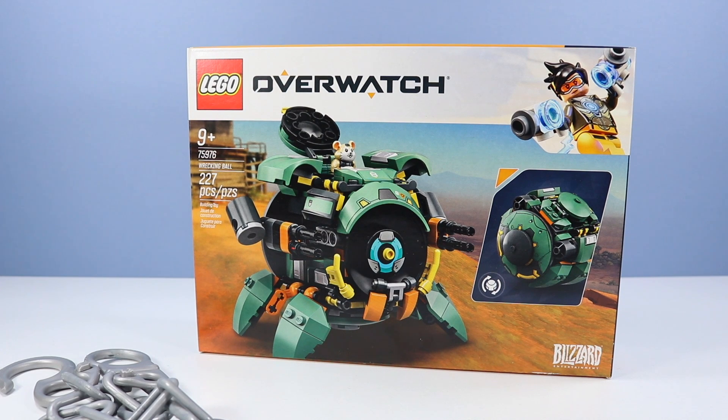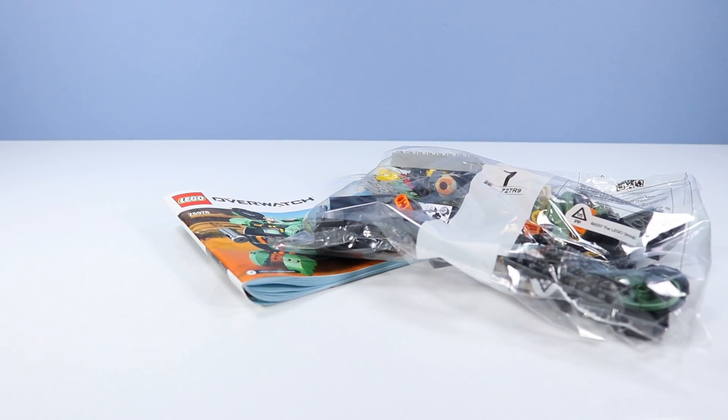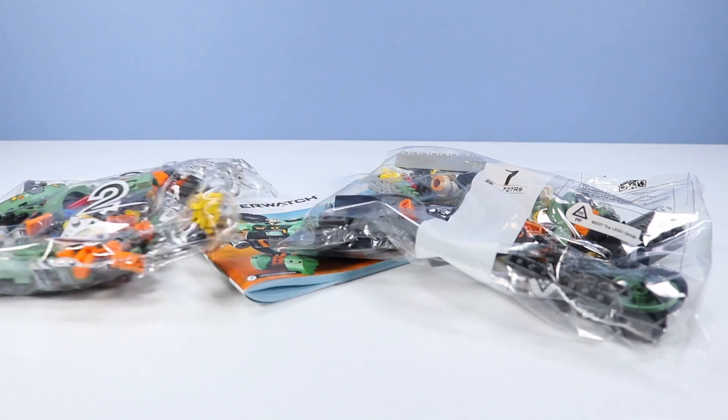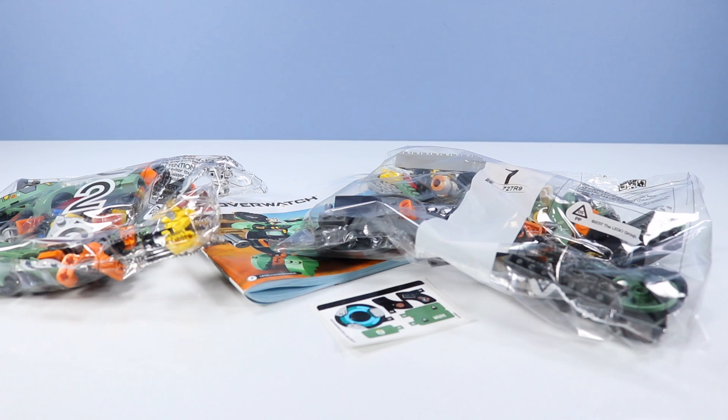On the back of the box or is this the front of the box? Darn these Overwatch sets! I have enough confusion not really getting a chance to play the game just enjoying the toys. So inside the box small set of instructions, bag of one pieces but with other pieces inside, and two bags of pieces, and a few stickers to decorate. Well let's get the wrecking ball rolling and build this set!